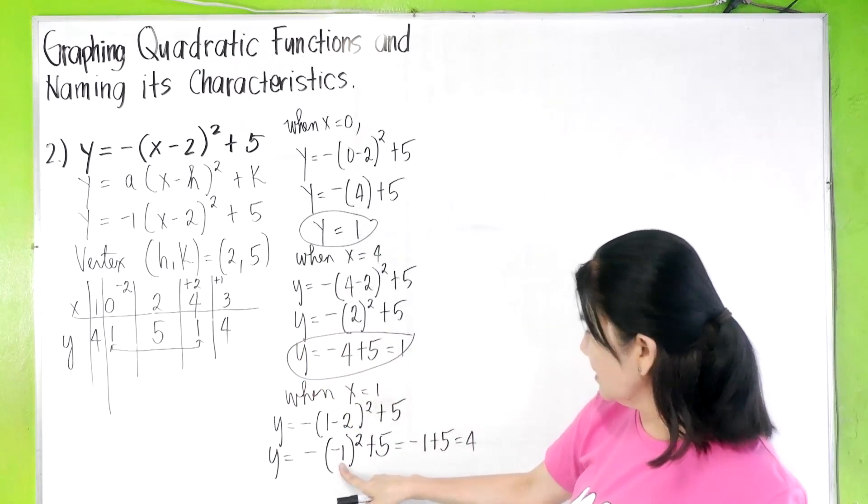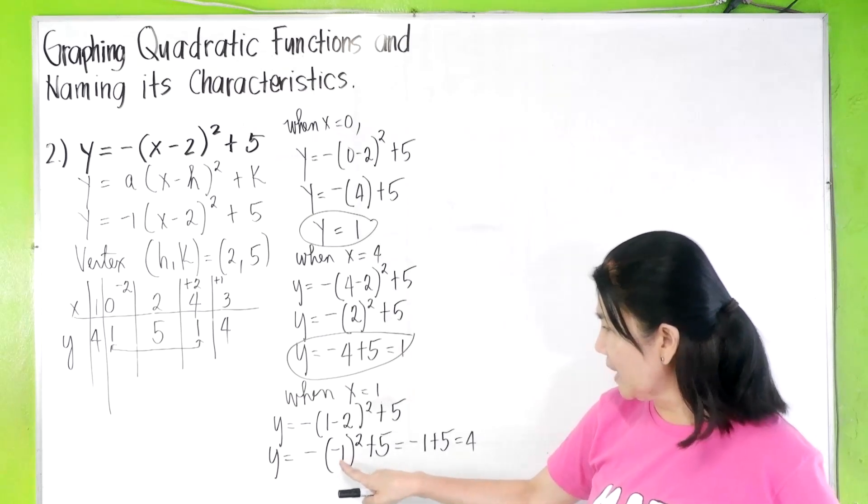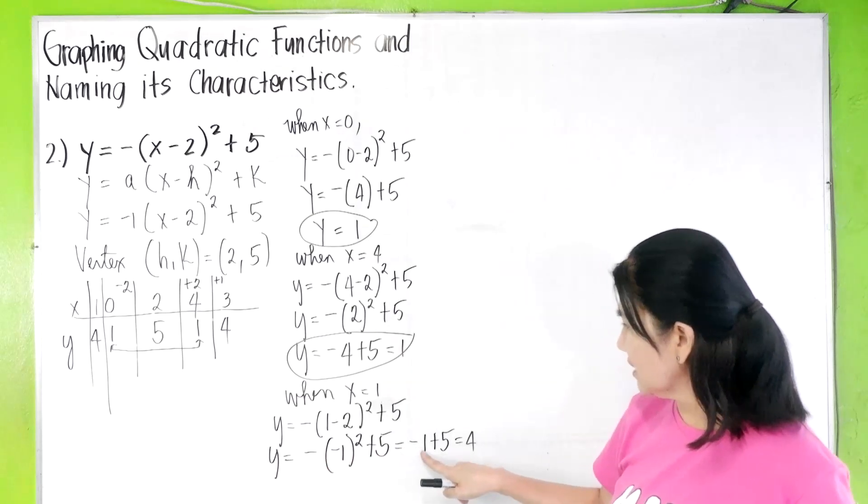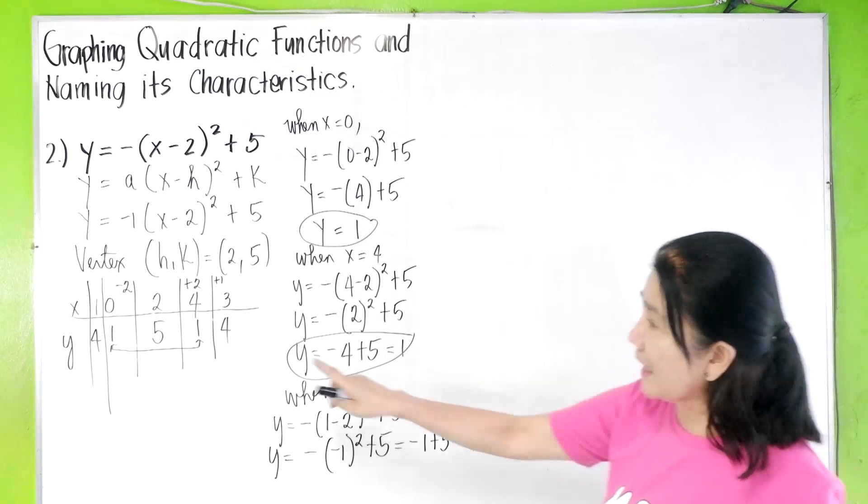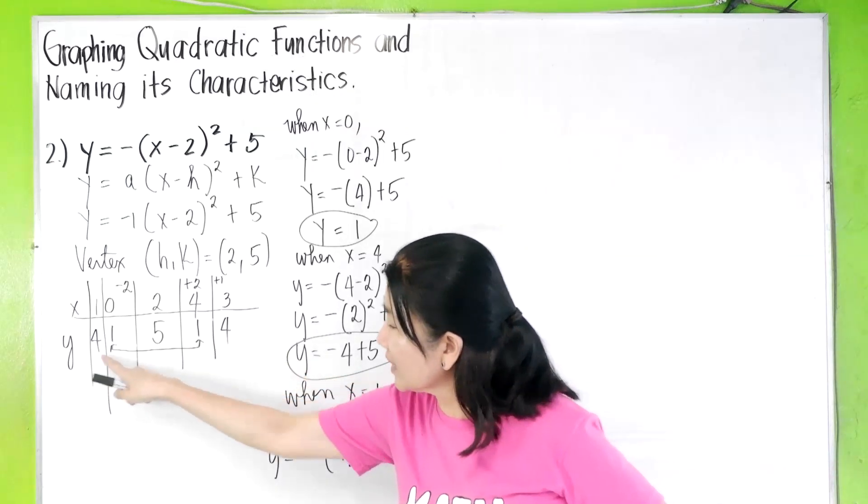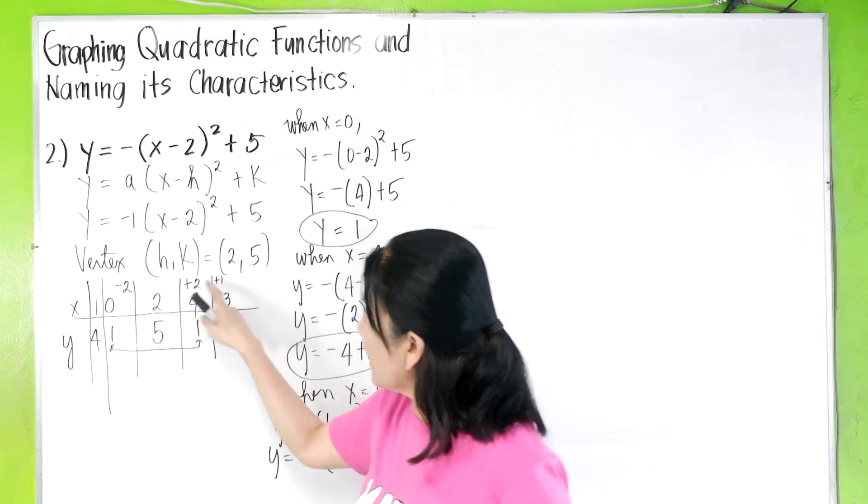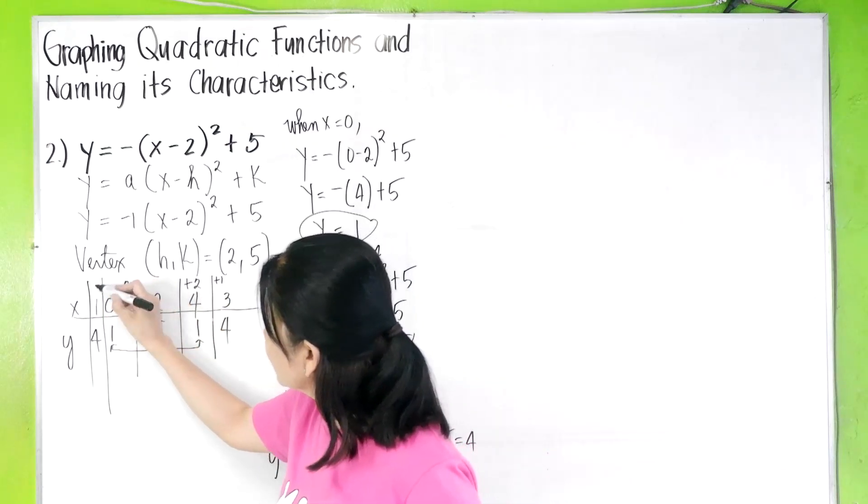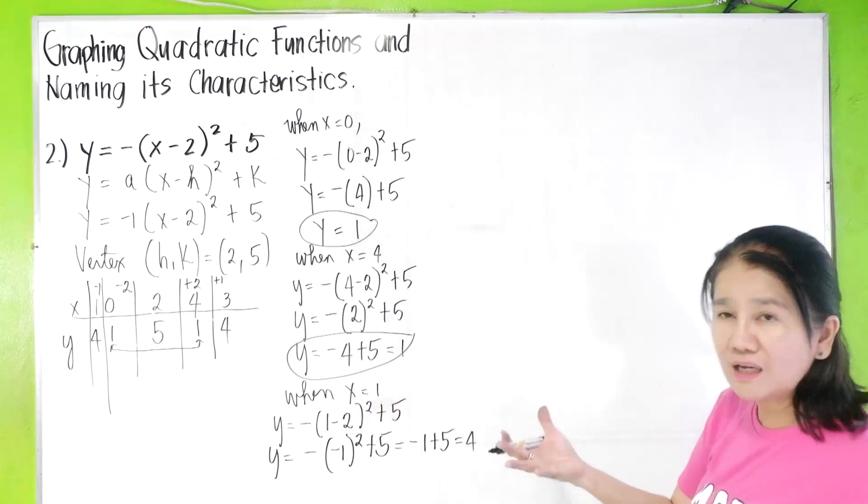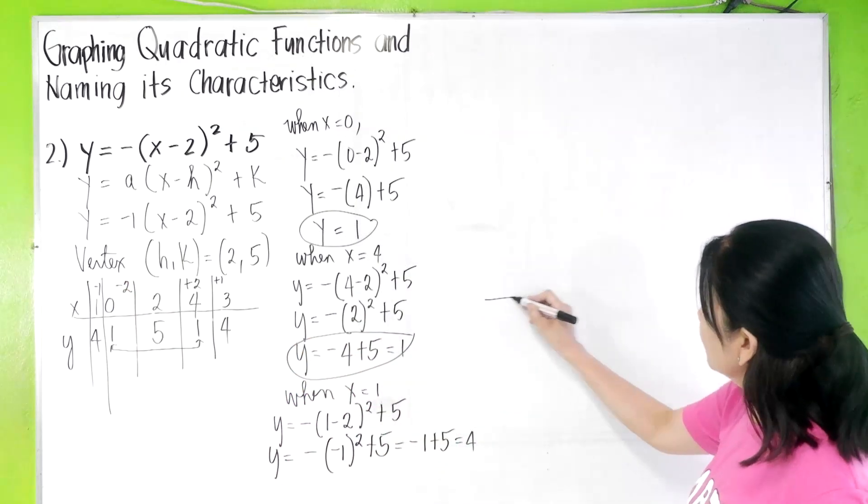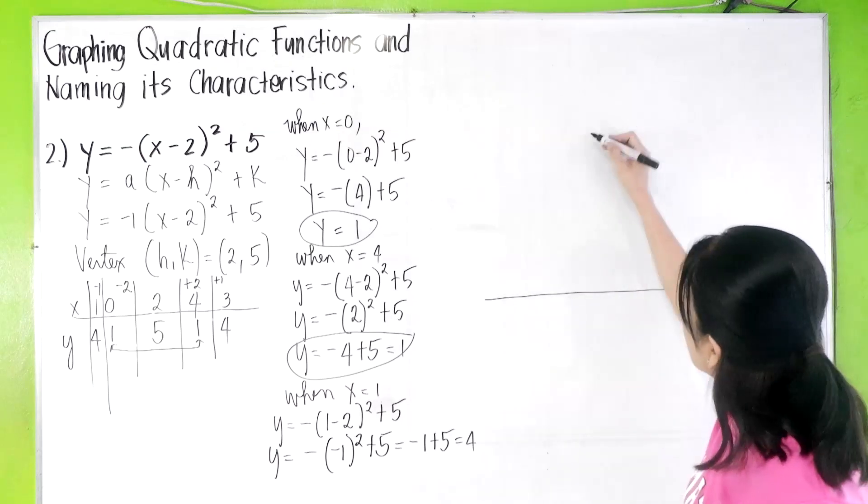I'm just checking. This is positive one times negative is negative one plus five, so that is four. So that I can show you that whatever number you add here, you will be getting the same parabola.